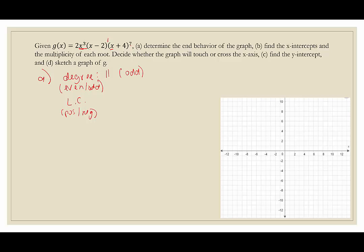Next, we need to know the leading coefficient. We're going to look at each factor that contains x and look at the coefficients of x. We have 2, 1, and 1, so the leading coefficient is 2, and what we care about is that 2 is positive. Given that the degree is odd and the leading coefficient is positive, this graph will go down to the left and up to the right. More formally: as x approaches negative infinity, g of x approaches negative infinity, and as x approaches positive infinity, g of x approaches positive infinity.